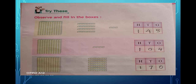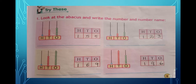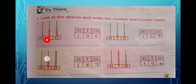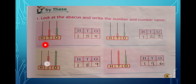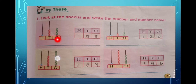Now let us do from page number five — also 'Try This.' An abacus is given with ones place, tens place, and hundreds place. You have to count the number of beads on the abacus and write them in the proper place. Let us count: in ones place there are one, two, three, four, five — five ones. How many tens are there?